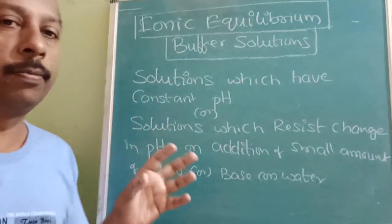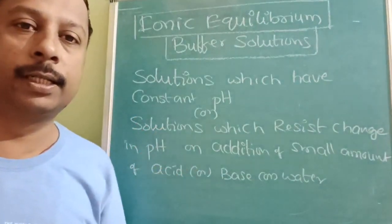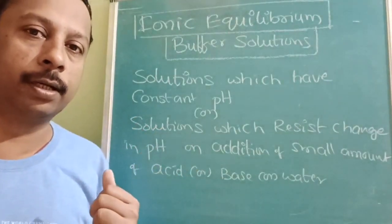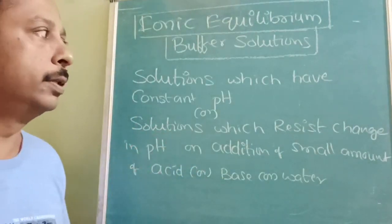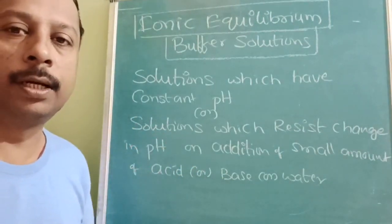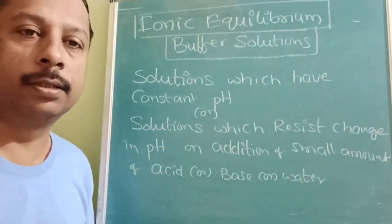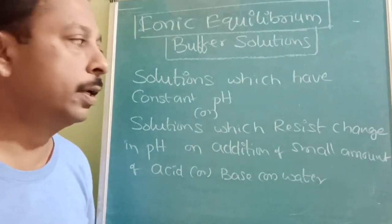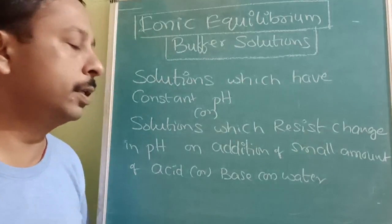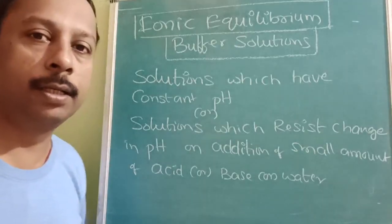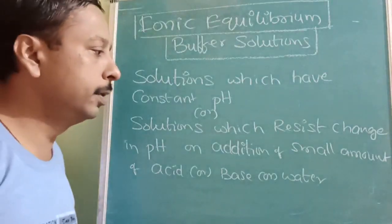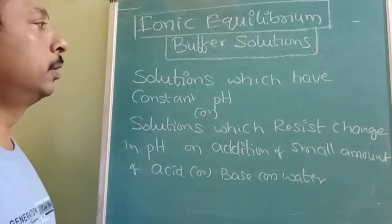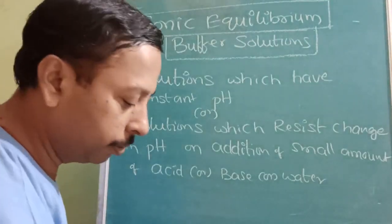The quantitative part and explanatory part with chemical equations we are going to study here. The system or the solution or a mixture which can resist the change in pH on small addition of acid, base, or water — such solutions are called buffer solutions.